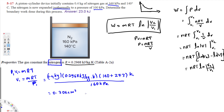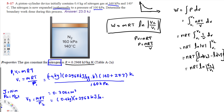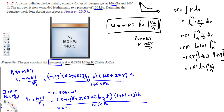Now find V2 using the same equation, V2 = mRT/P2. Same values on top — 0.4 kg times 0.2968 kJ/(kg·K) times 413 K — divided by P2 = 100 kPa. That gives V2 = 0.4903 cubic meters.